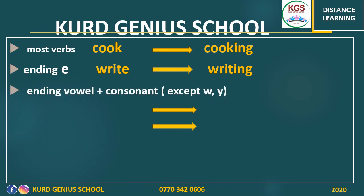Sometimes, when a verb's last letters are vowel then consonant — except 'w' and 'y', which we can't double — we double the last consonant and add -ing. For example: travel → travelling (double the l). Or swim — it's only one syllable, so we double the m: swim → swimming.